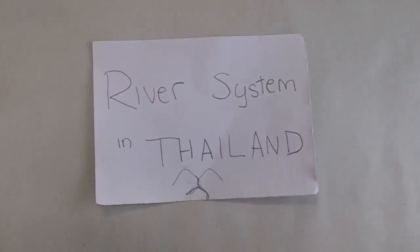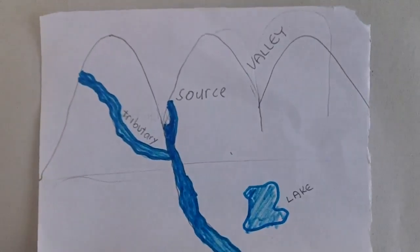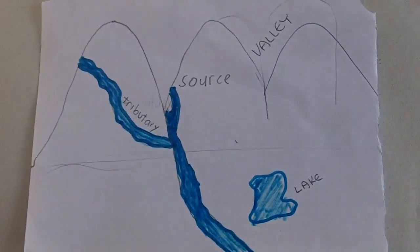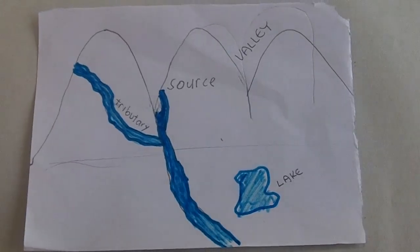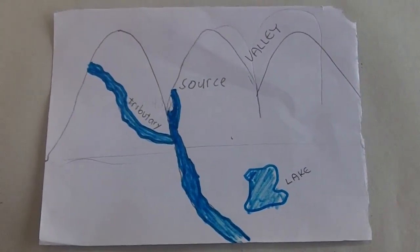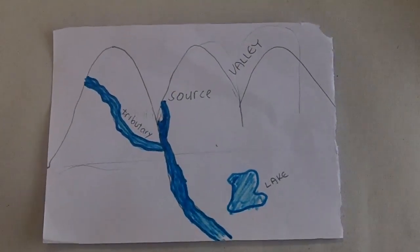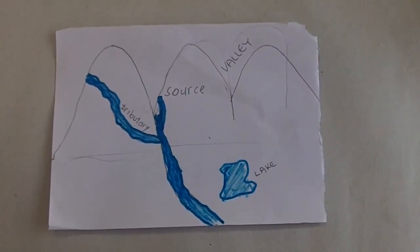River systems in Thailand. Here's the source, and there's also a valley where two mountains meet together — basically at the bottom of the two mountains. There's a tributary entering the main river, and there's a lake on the side.